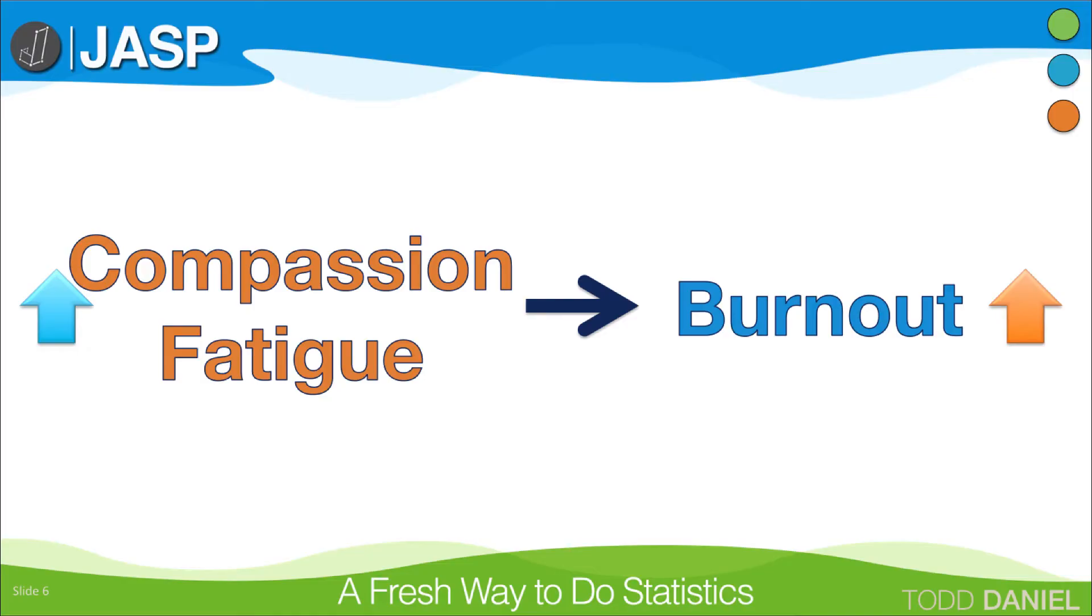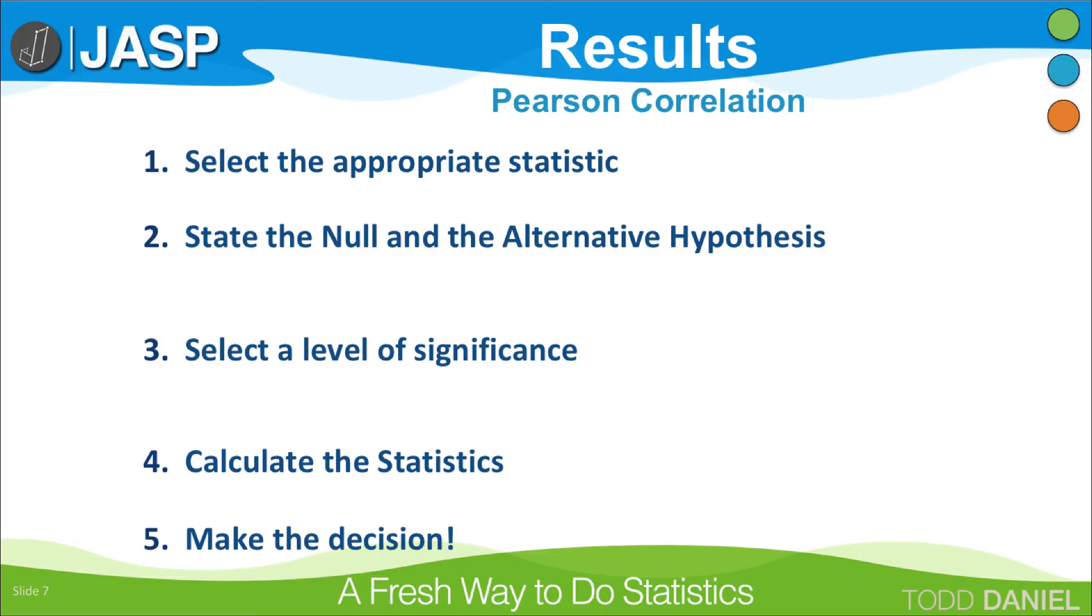Let's walk through the five steps of hypothesis testing. Step one, select the appropriate statistic. We are measuring the strength and direction of a relationship between two variables, so we will use the Pearson correlation. Step two, state the null and alternative hypothesis. The null hypothesis is that the population correlation is zero for each pair. So we write H sub zero colon rho equals zero, where rho is the Greek letter for lowercase r. The alternative hypothesis is H sub one colon rho does not equal zero.